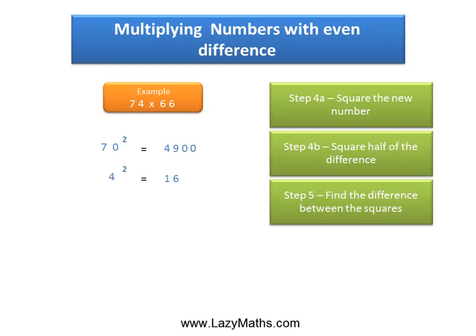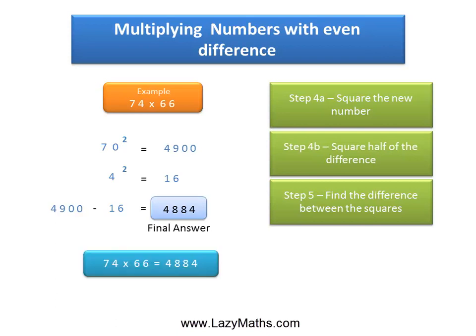And then the last step is simply to find the difference between 4900 and 16. 4900 minus 16 equals 4884. And this becomes our final answer. So 74 times 66 equals 4884. And that's it. Thank you.